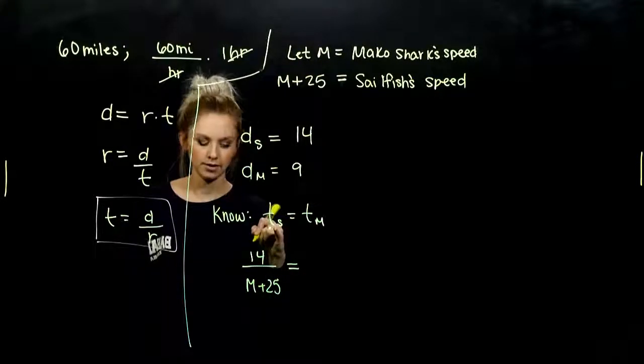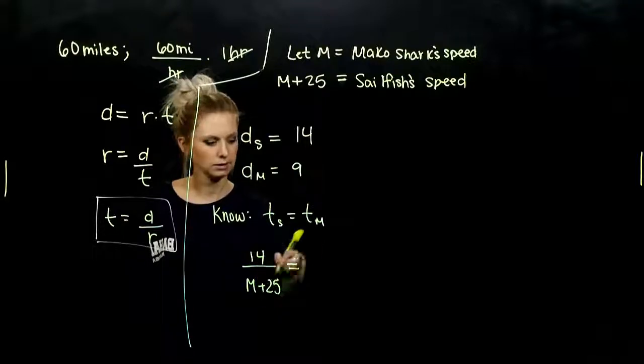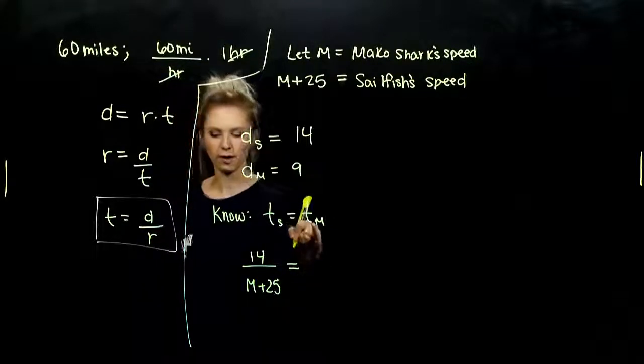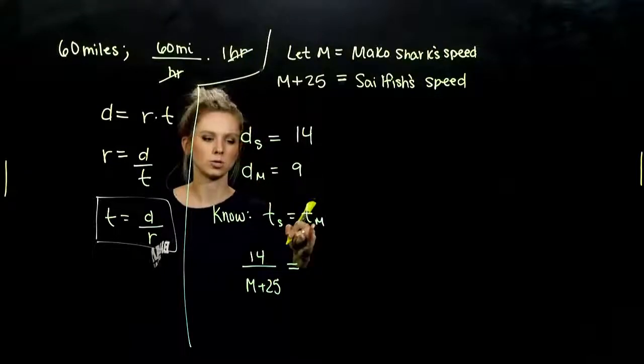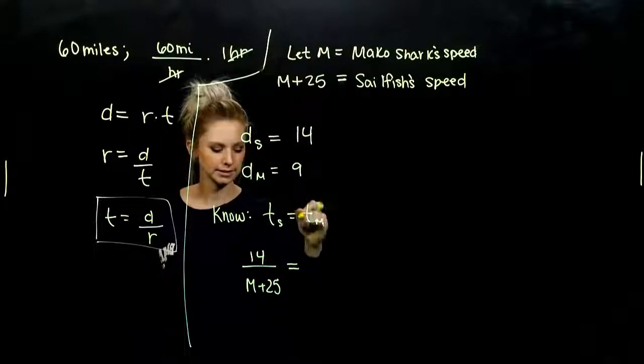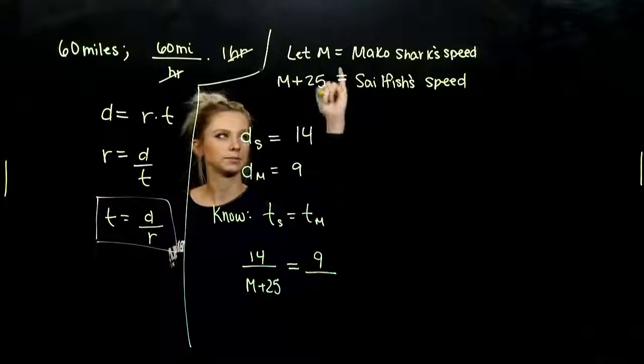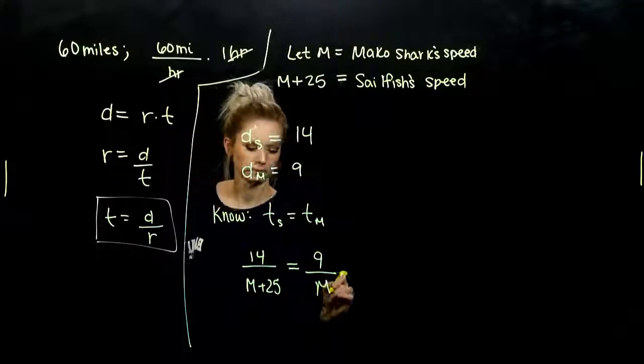And I know those times are equal. So since time for S is given, time for M we need to build as well. So how far did the mako shark swim? What was his distance? 9 miles. And what was his rate? M.